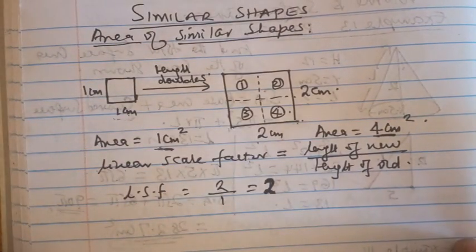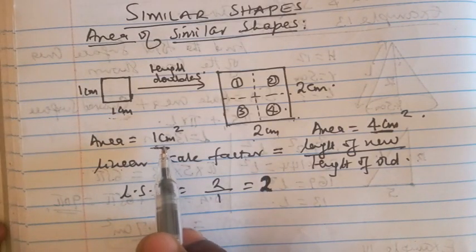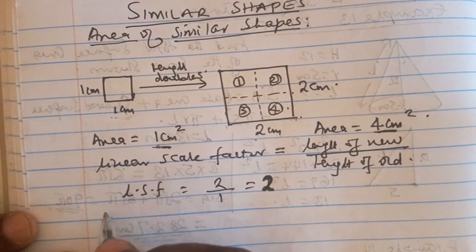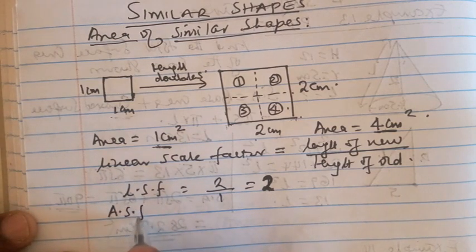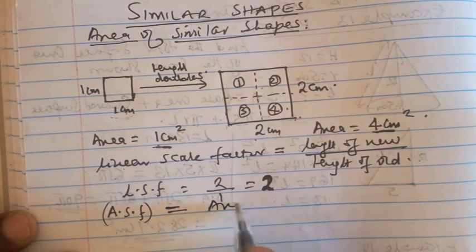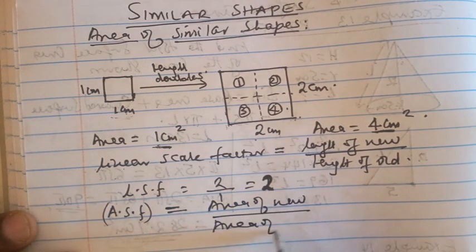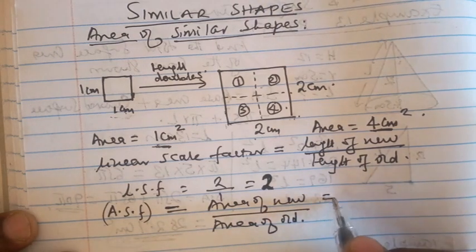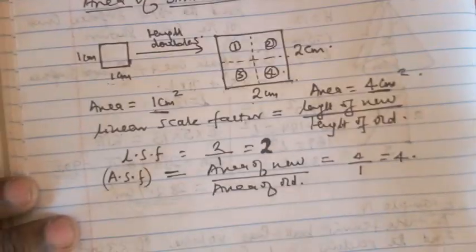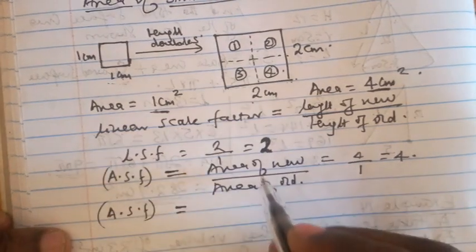We have also talked about the area of the new figure compared against the area of the old figure. It is important to understand that the area scale factor is given by the area of the new figure divided by the area of the old figure. In this case we have four over one, which is four.